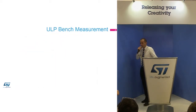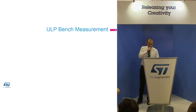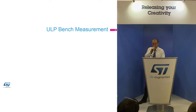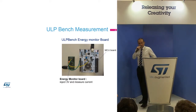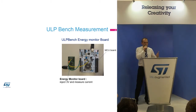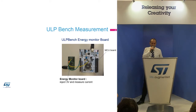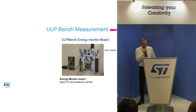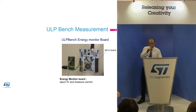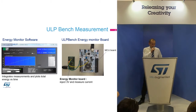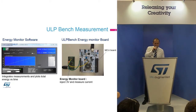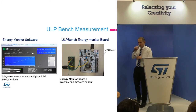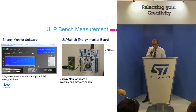Now let's have a look at how to really measure it. You need to use an energy monitor board — it's a specific board. This board injects three volts and measures the current during the different cycles. The energy monitor board is connected to a PC, and there is software running on the PC which integrates the measurements and plots the total energy versus time. Then it shows a score — again, the higher, the better.